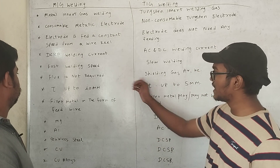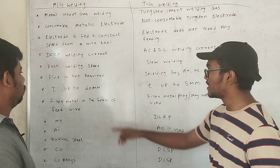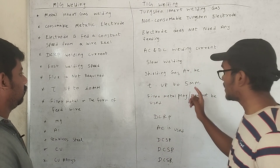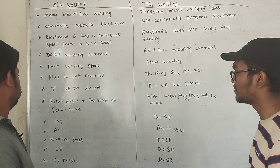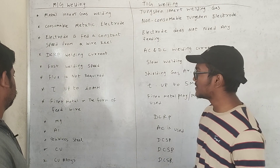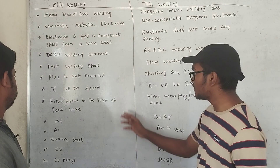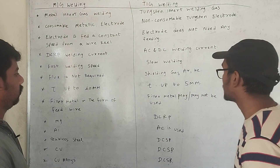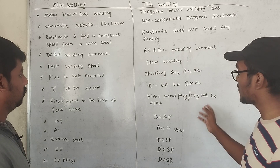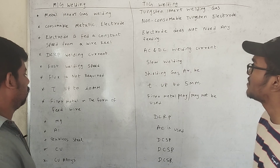MIG welding requires flux. The thickness for MIG is 40mm and for TIG is 5mm. Both processes use filler metal.